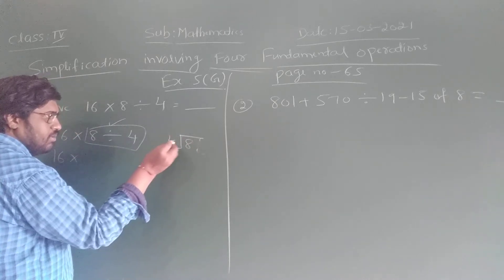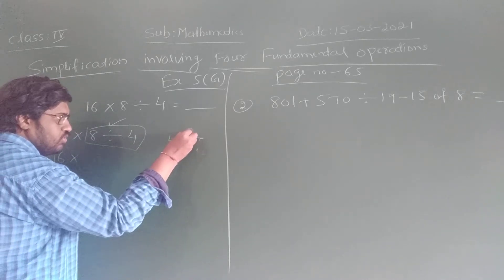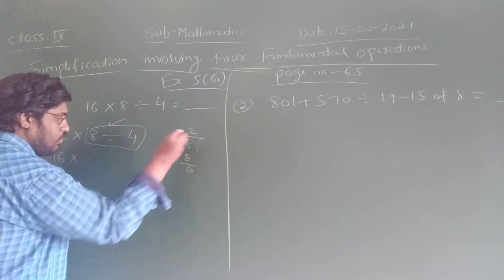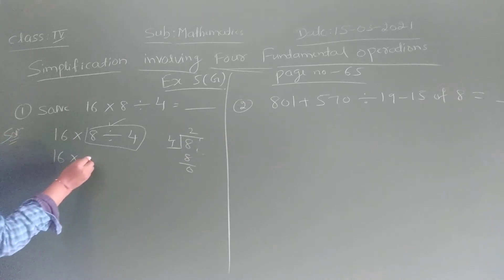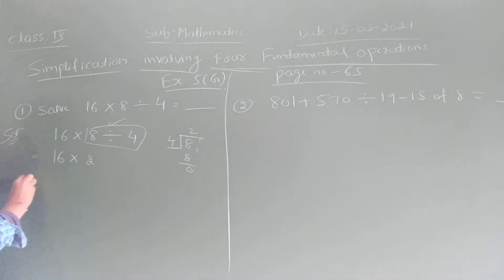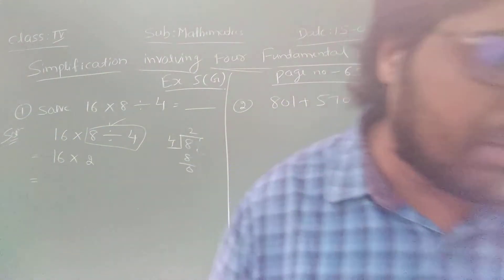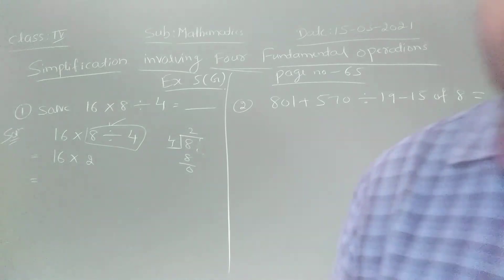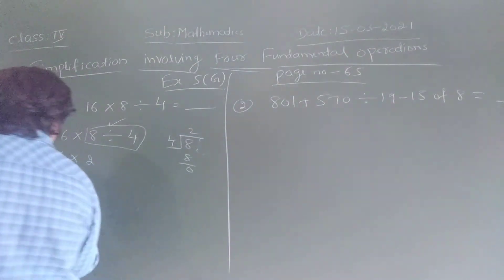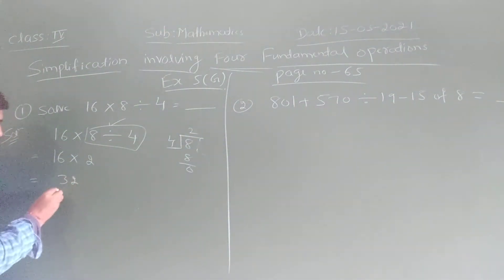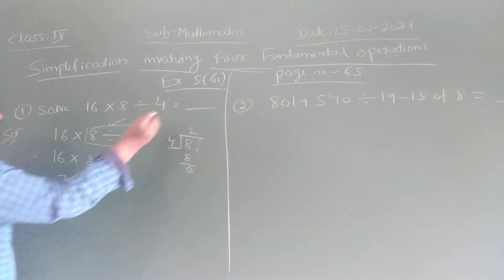4 divides into 8. What answer do you get? 2. So 8 divided by 4 is 2. Now it becomes 16 into 2. How much is 16 into 2? 16 into 2 is 32. So the answer is 32. The final answer is 32.